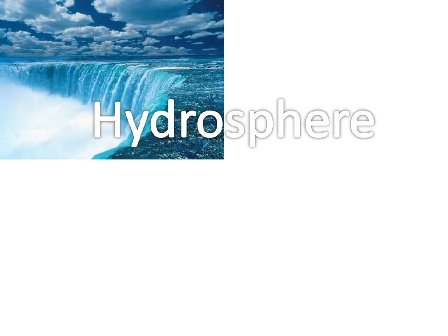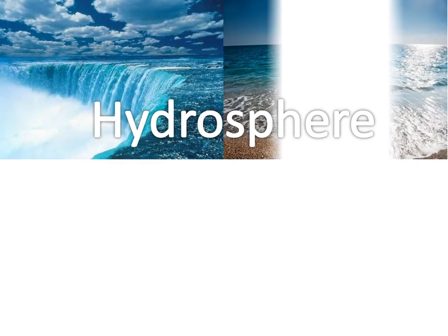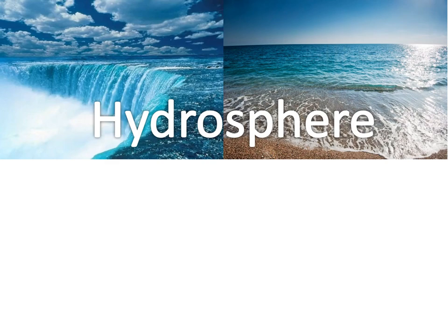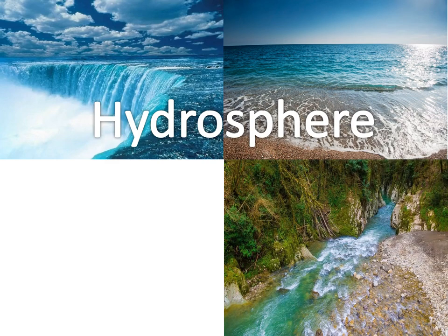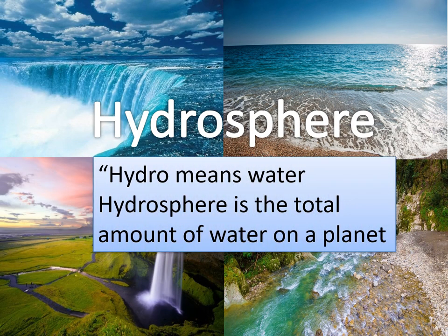We have the hydrosphere. Examples of the hydrosphere include oceans, rivers, and waterfalls. Hydro means water. The hydrosphere is the total amount of water on a planet.